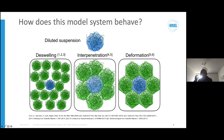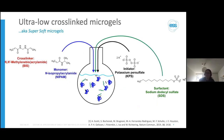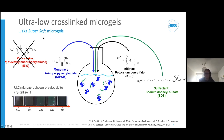As we increase concentration in solution, microgels can deswell, interpenetrate, and deform, interacting with their neighbors. If we take out the cross-linker reagent from the normal synthesis, we can create super-soft microgels. It was previously shown that these super-soft microgels were able to crystallize—at a particular concentration theta, little speckles appear indicating crystal formation. The aim of the study I want to describe was to see how these super-soft microgels responded to crowding.